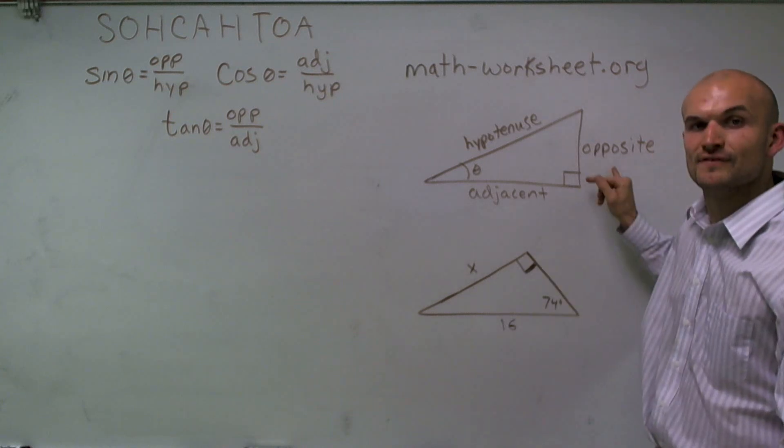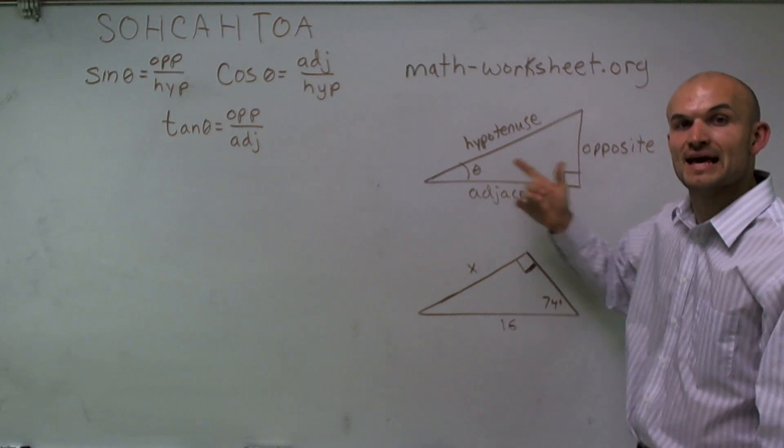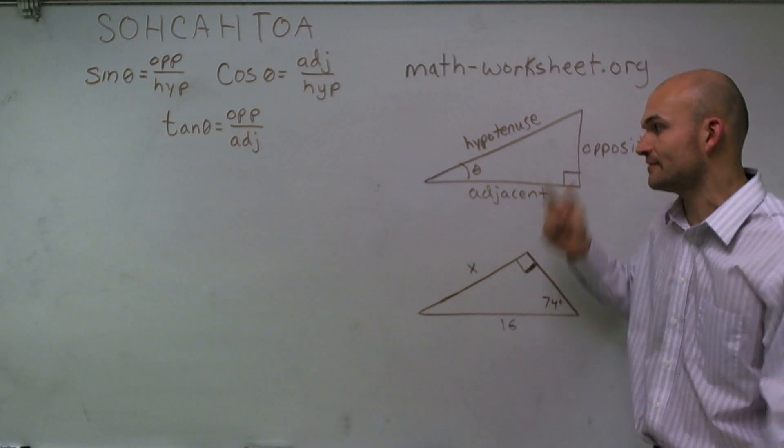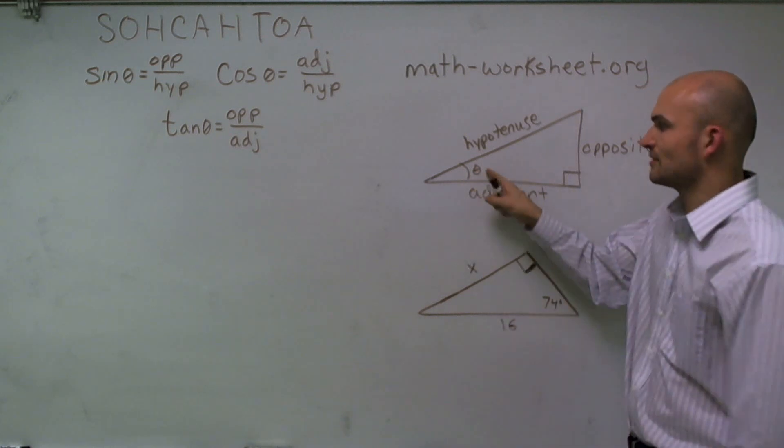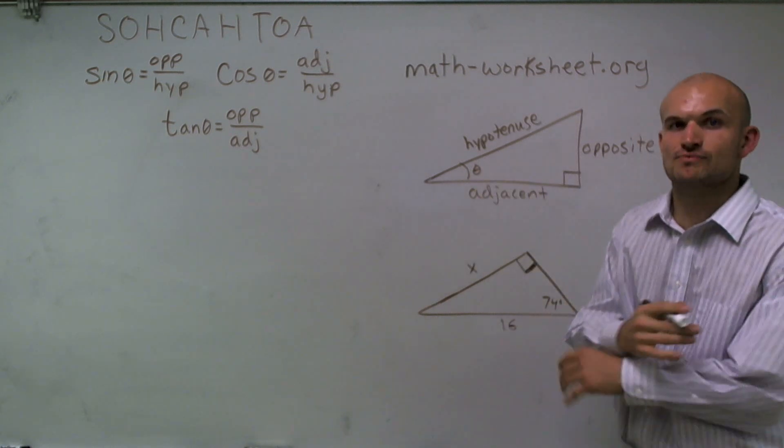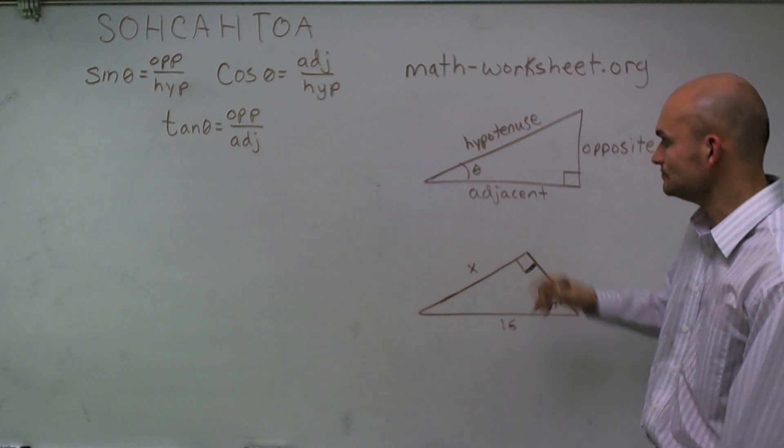Now, the legs have two different names that depend on the angle inside the triangle that we're given. Here, I'm talking about this angle theta, and theta can represent any angle.